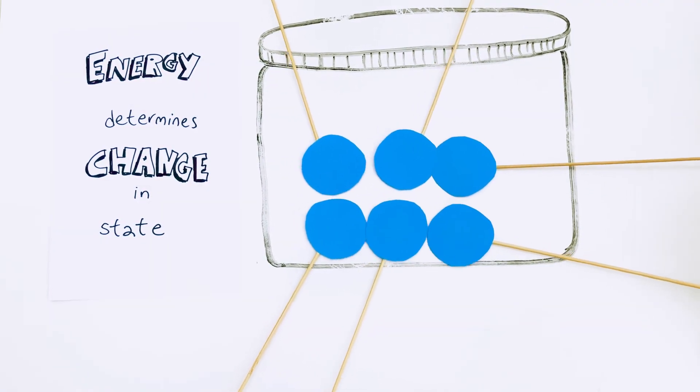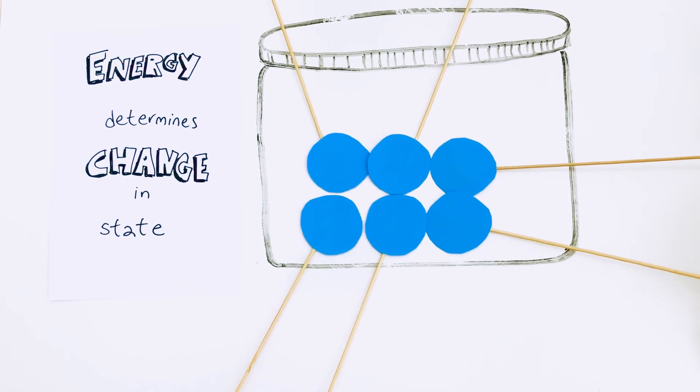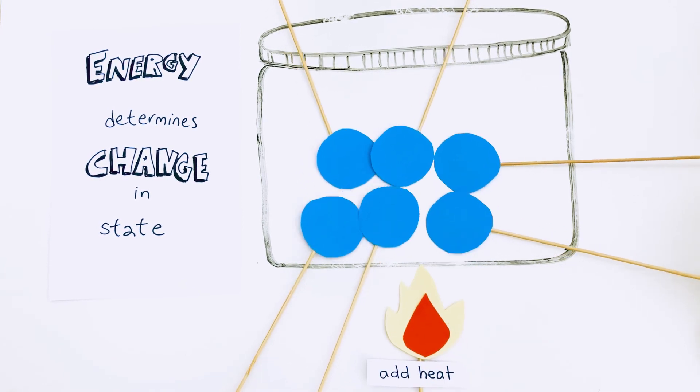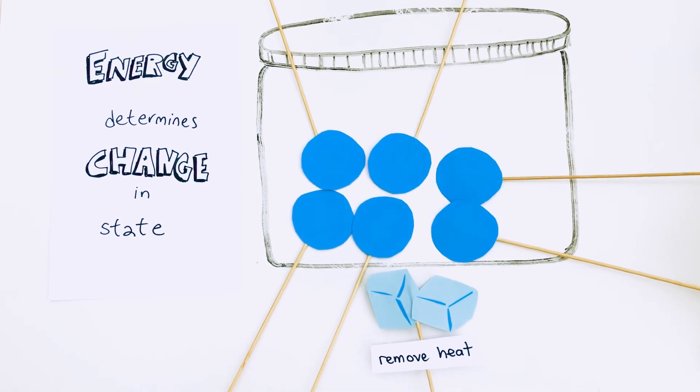In conclusion, it's the amount of energy that particles have that determines whether a substance will change in state. Gaining energy causes particles to move more and losing energy causes them to move less.